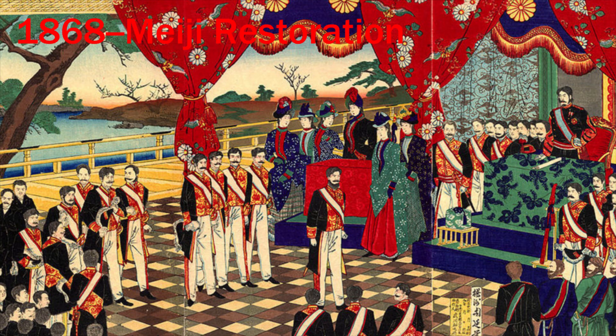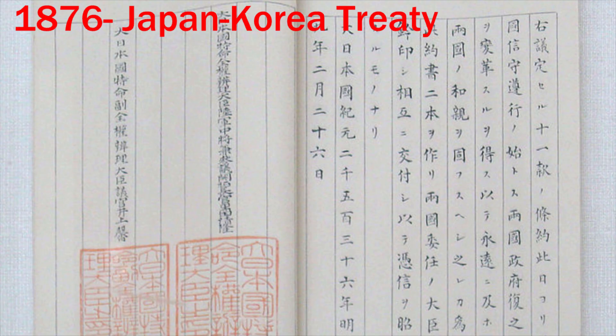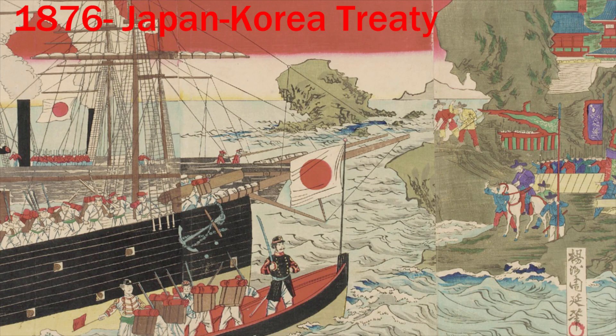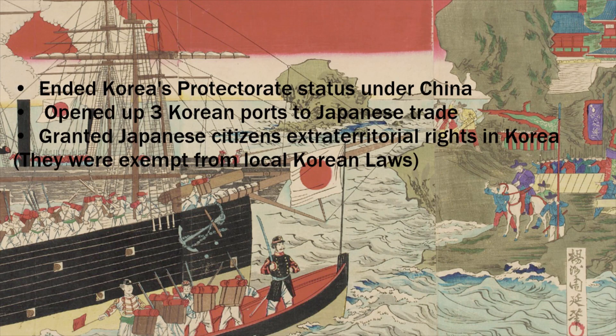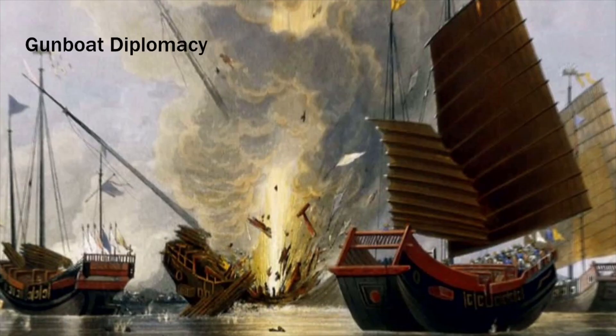Japan had begun heavily influencing Korea since the Meiji Restoration in 1868. Eight years later, in 1876, Japan forced Korea to sign the Unequal Japan-Korea Treaty, ending Korea's protectorate status under China, forcing them to open up three Korean ports to Japanese trade, and granting Japanese citizens extraterritorial rights in Korea. This treaty is a classic example of gunboat diplomacy, a very common form of imperialism in the 1800s.